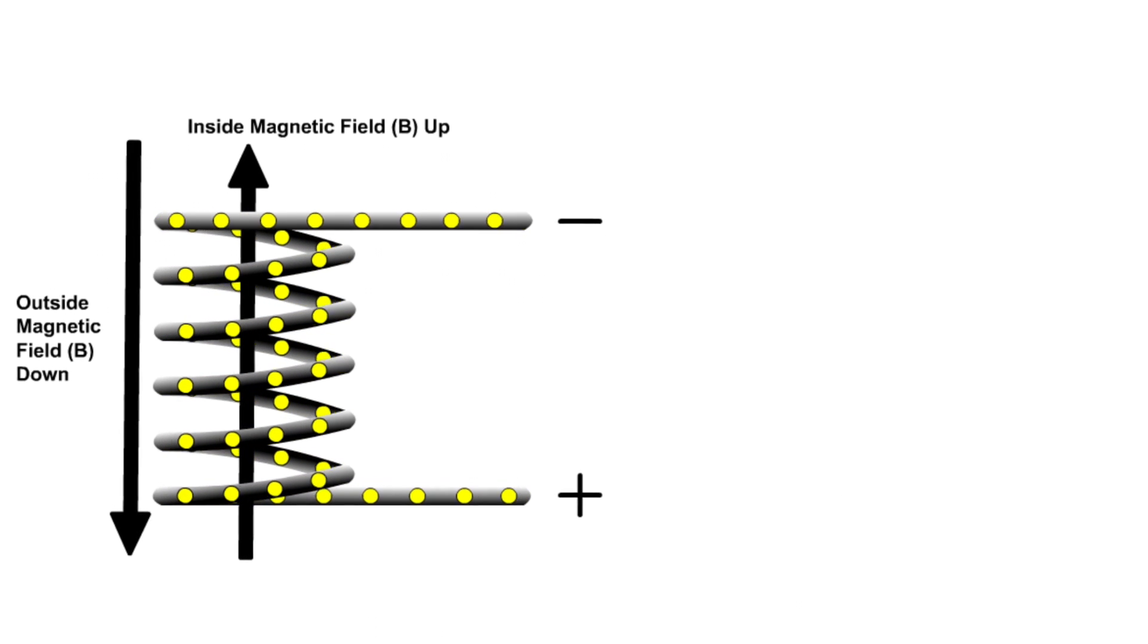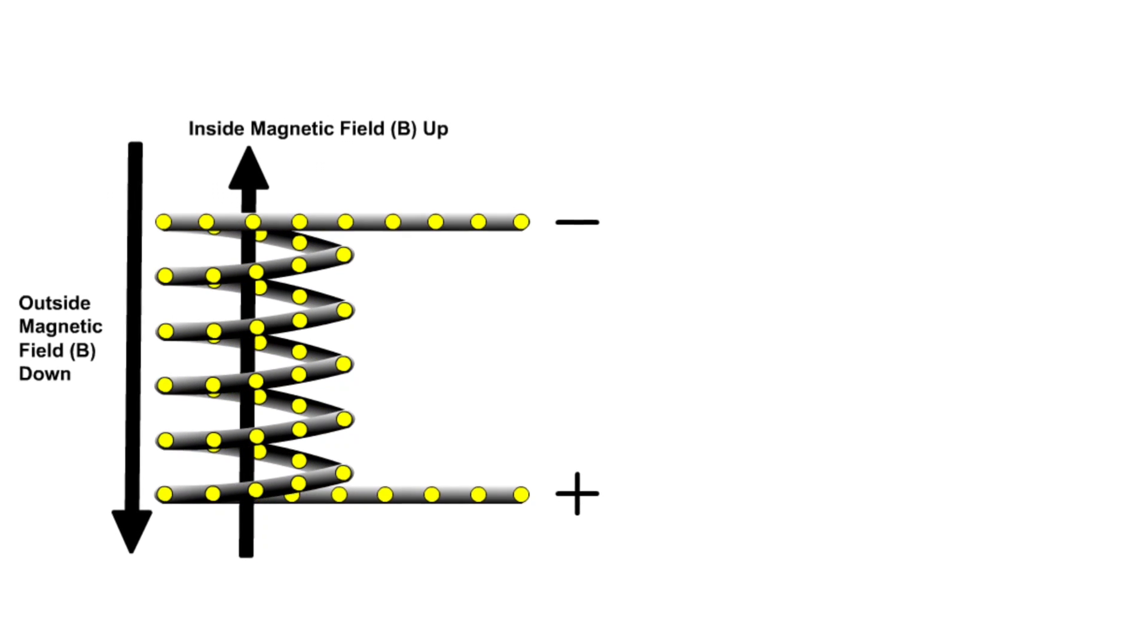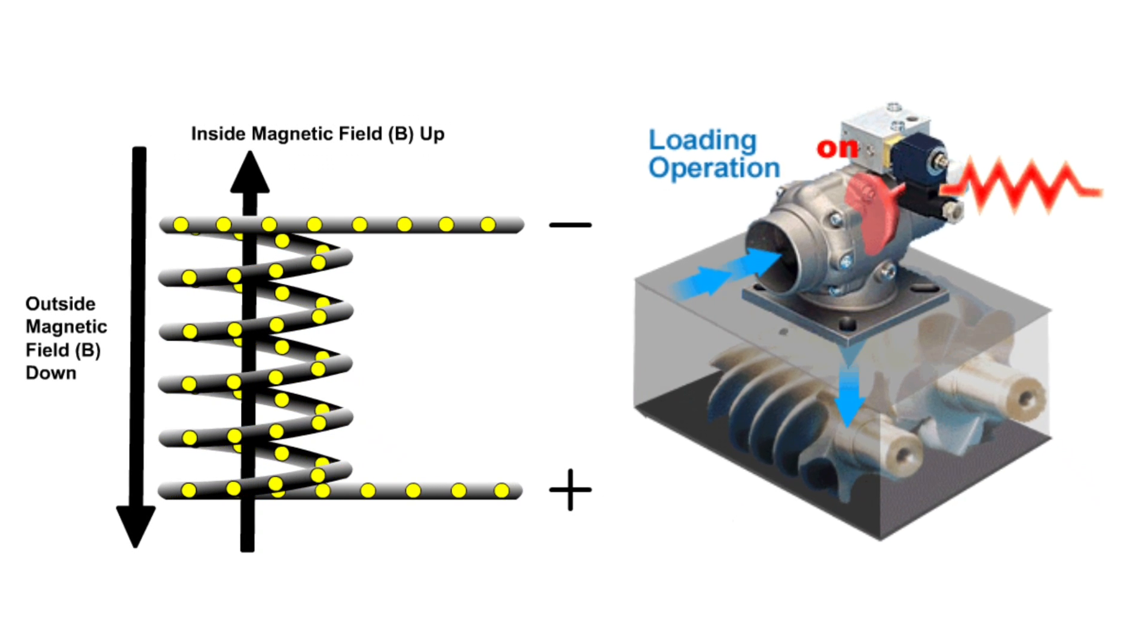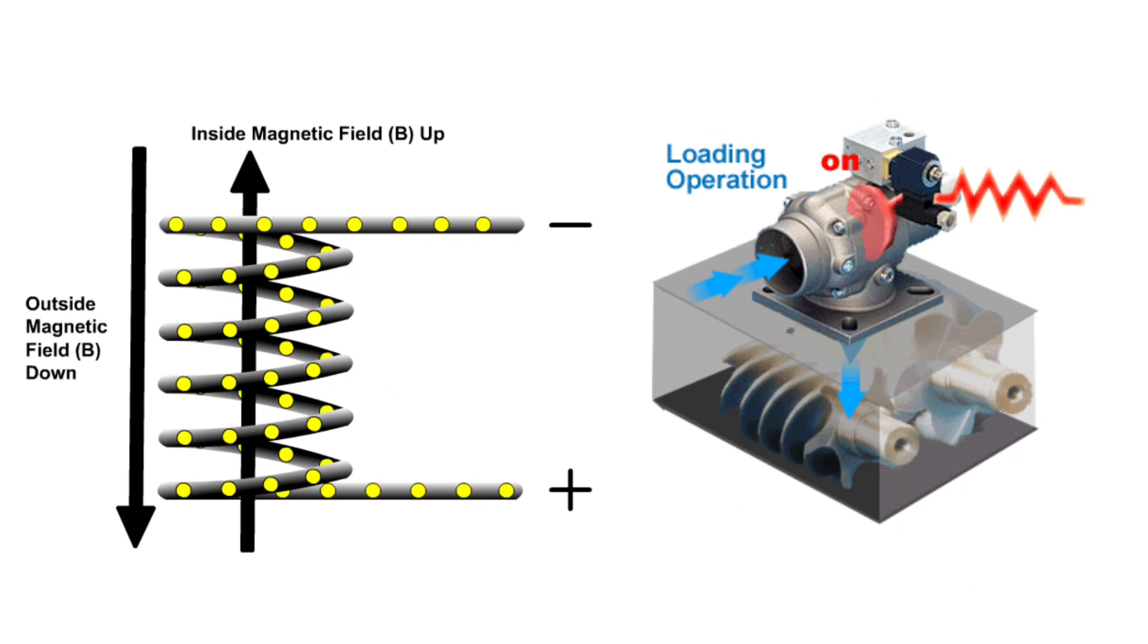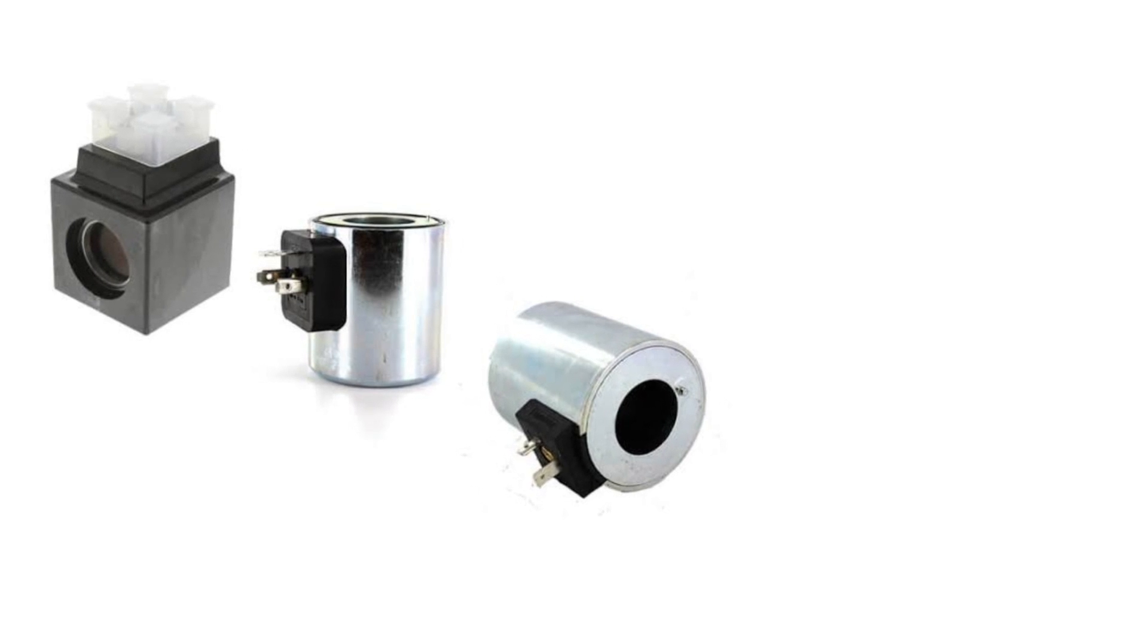A solenoid consists of the coil, the tube, and the armature. The solenoid coil is working in the circuit and can be worn out. As the main part of a solenoid, the solenoid coil is replaceable when it's not working. Here is the way to check solenoid coils with a digital multimeter.